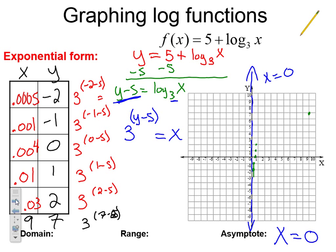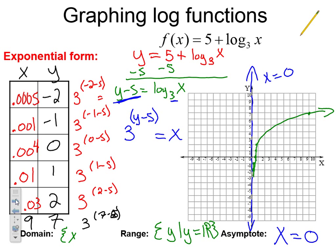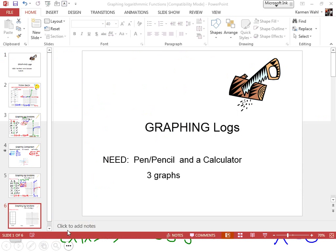Last thing — domain and range. The range is all real numbers since we pick any y value we want. The domain: the graph is to the right of our asymptote x equals 0, so x such that x is greater than 0. Alright ladies and gentlemen, that's all I have for you today. I hope you have a wonderful, fabulous day — I'll be seeing you, bye!